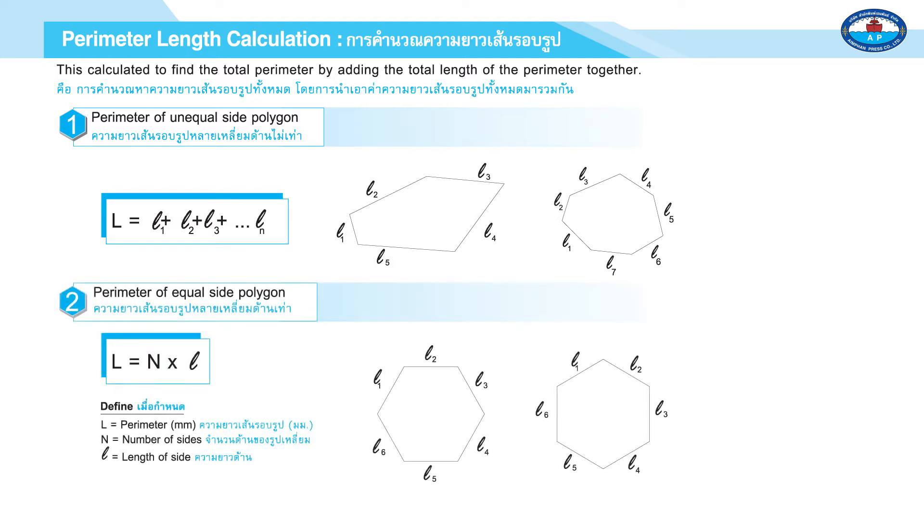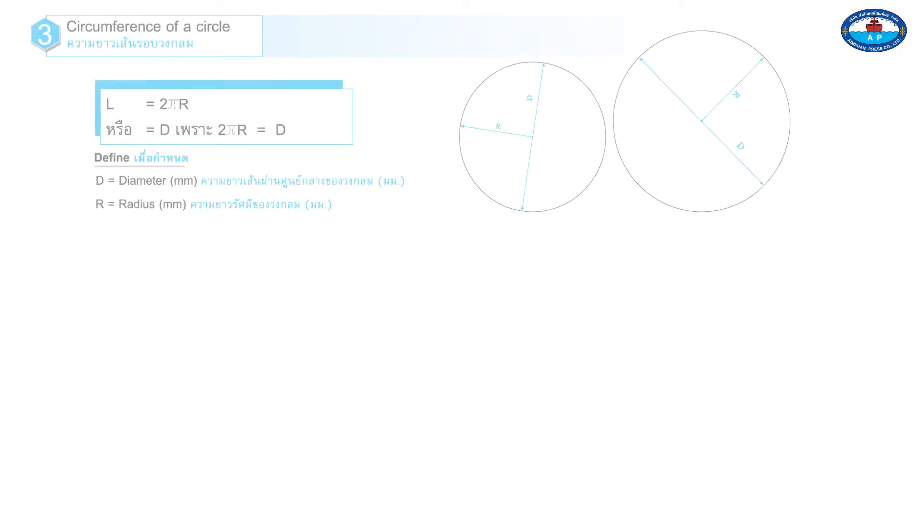2. Perimeter of Equal Side Polygon: Total length equals N times L. Define L equals Perimeter, N equals Number of Sides, L equals Length of Side. Page 50.